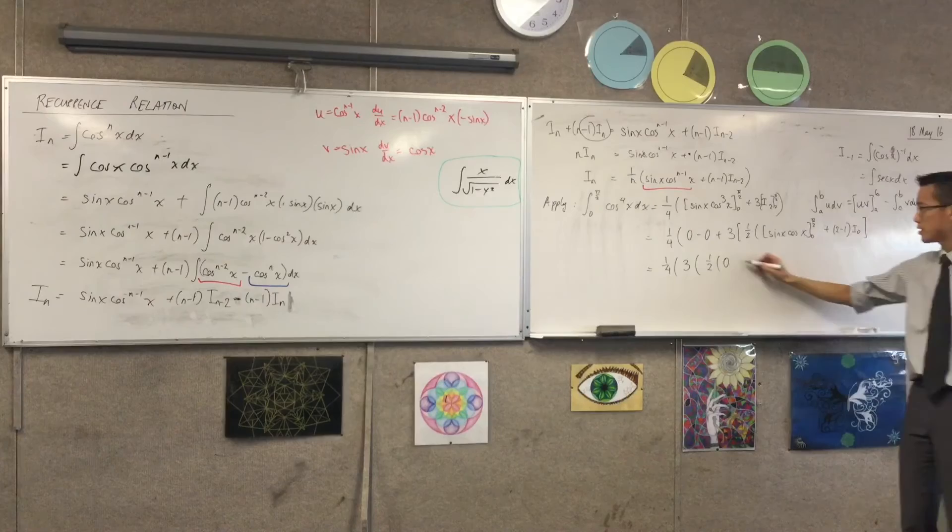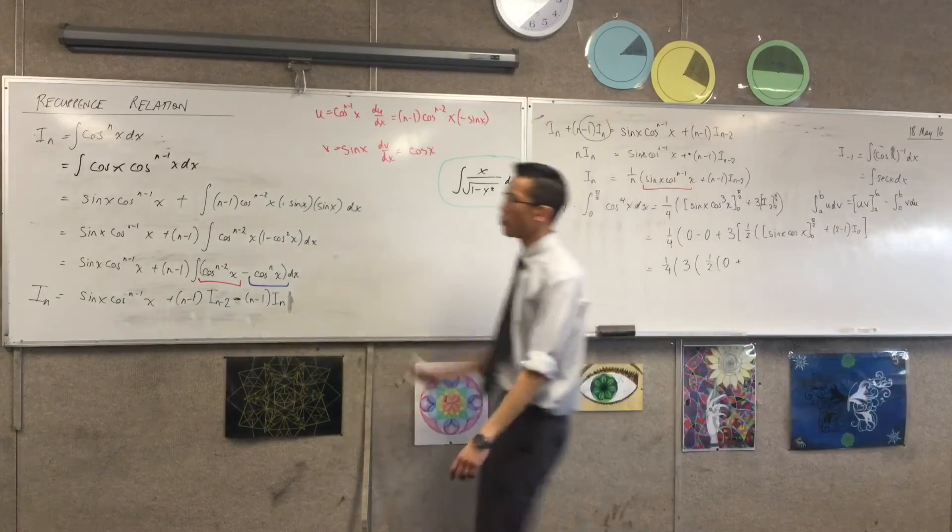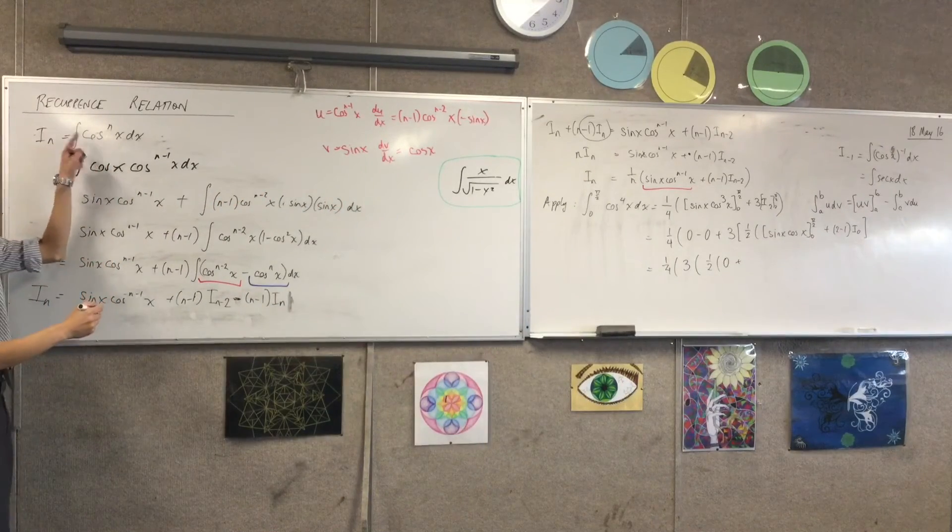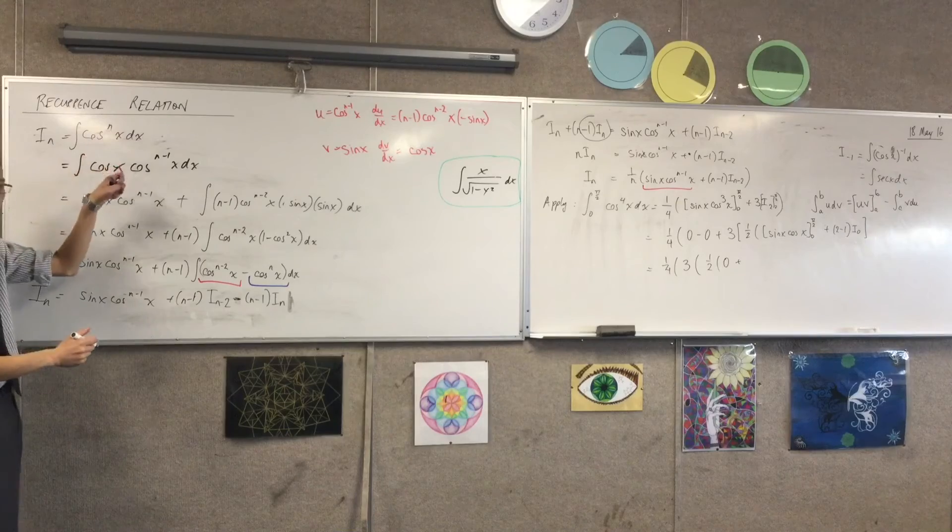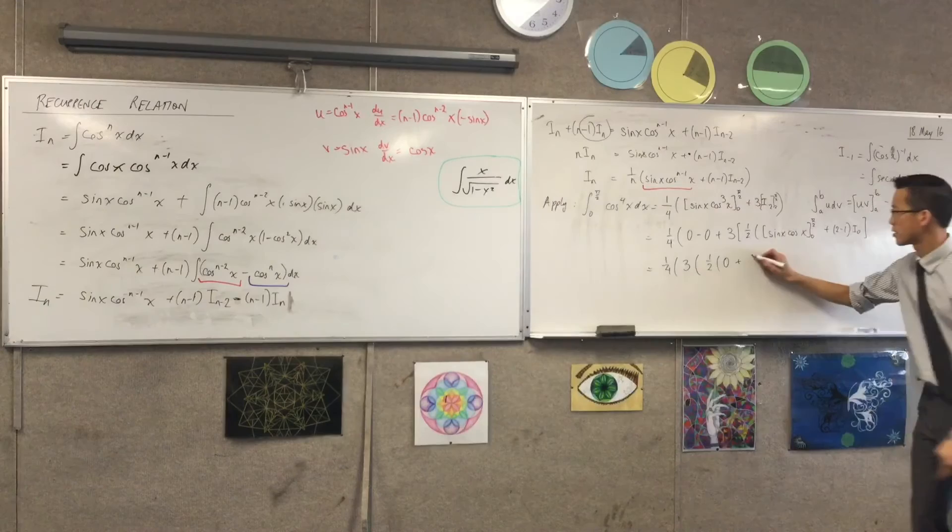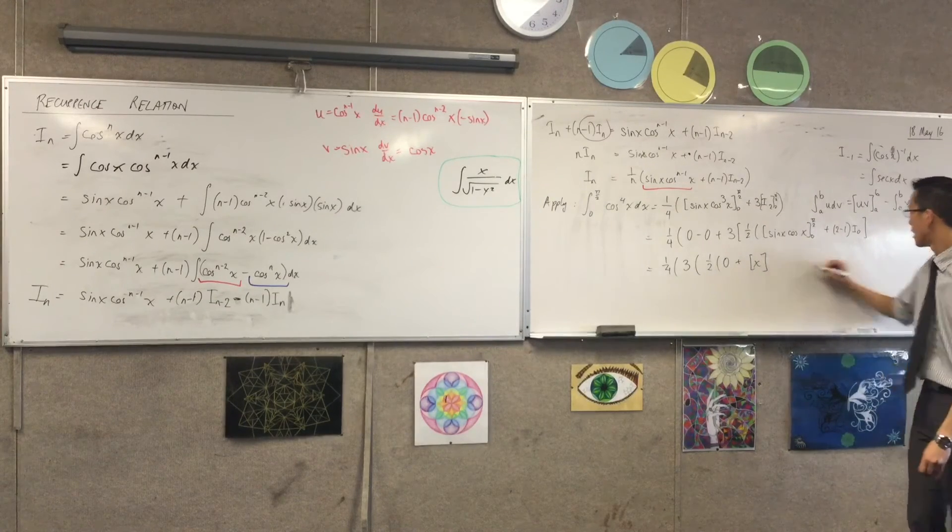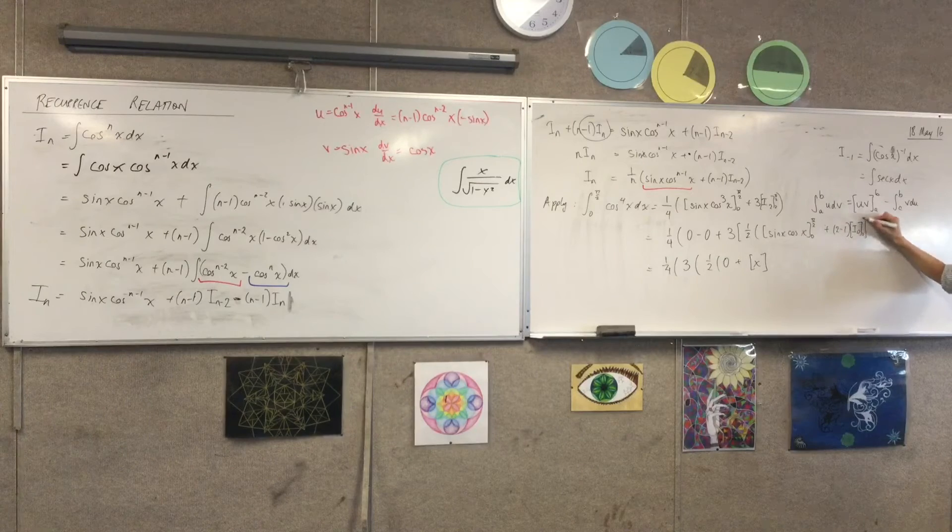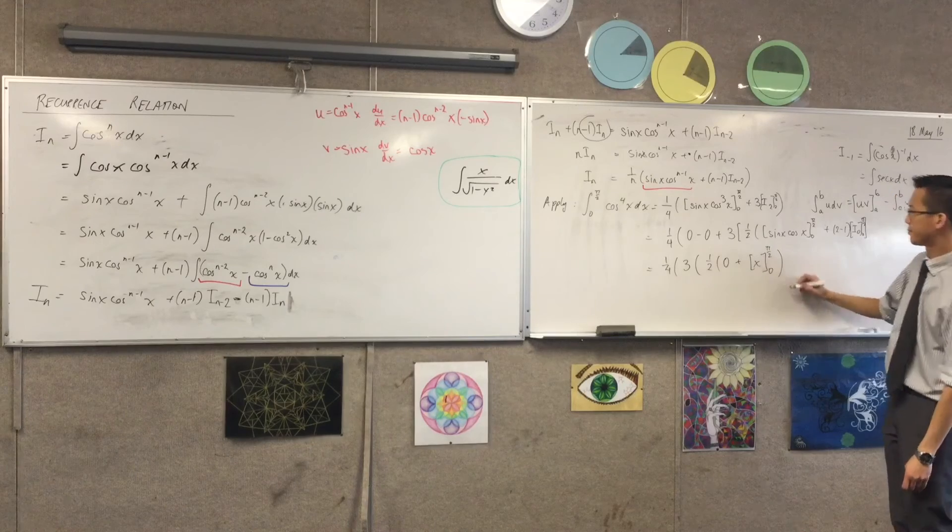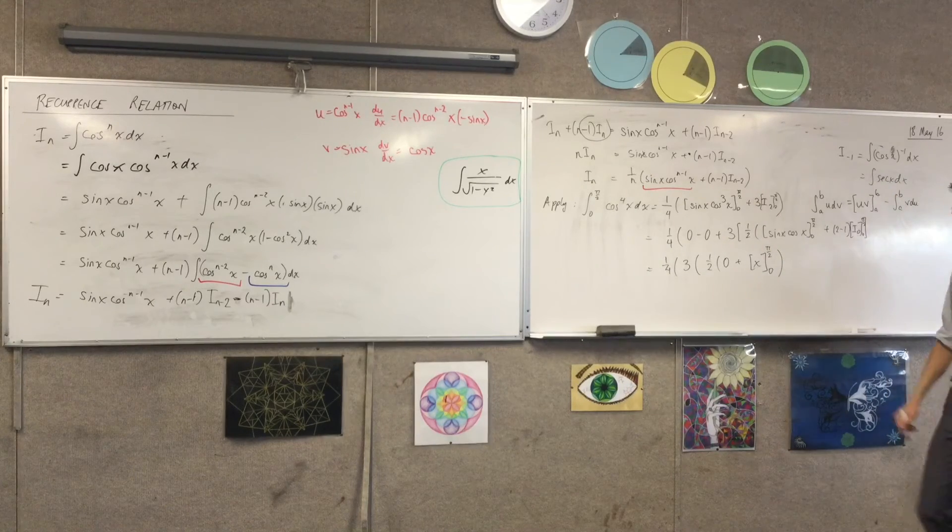0. What happens here? Well, this is 2 minus 1, which is 1 lot of I0. What's I0? Cos x. This is the integral of cos to the power of 0, x, which is just 1, right? So in fact, the integral of 1 dx is just x, right? From... I actually should have written... I forgot to write it here. From 0 to π/2. Yes. 0 to π/2. How does it look? Yeah. Okay.